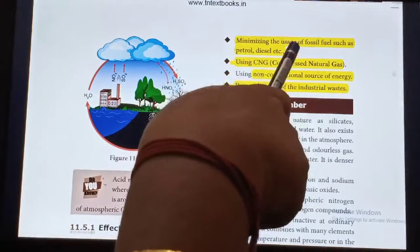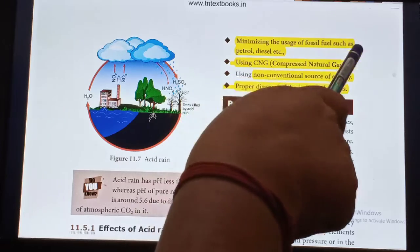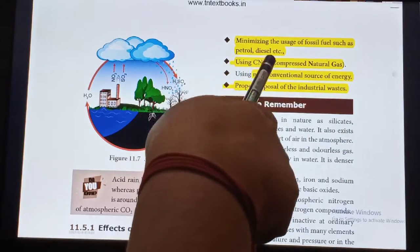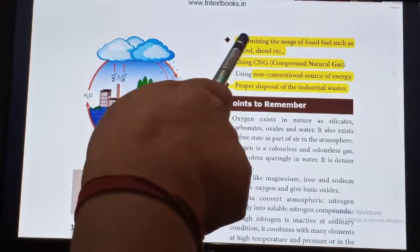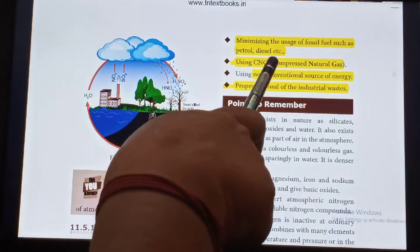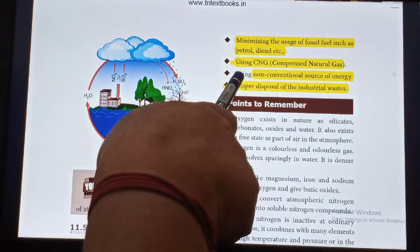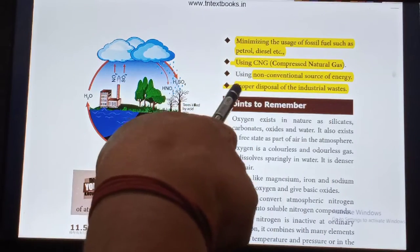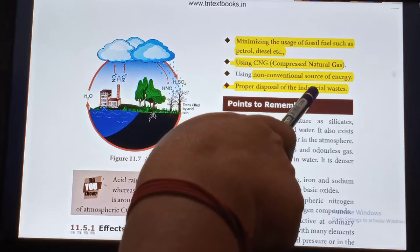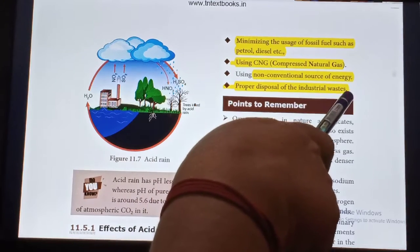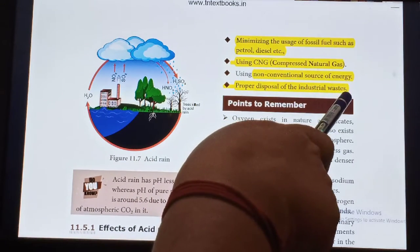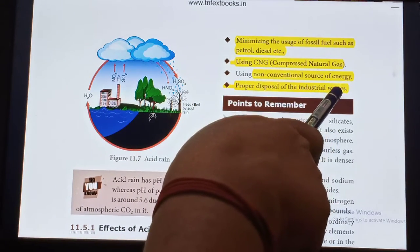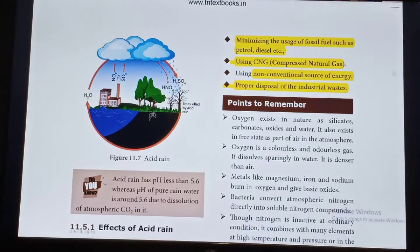Preventive measures for acid rain: minimizing the usage of fossil fuels such as petrol and diesel, using compressed natural gas, using non-conventional sources of energy, and proper disposal of industrial waste. Go through the video and find out the answers for the evaluation. Thank you, students.